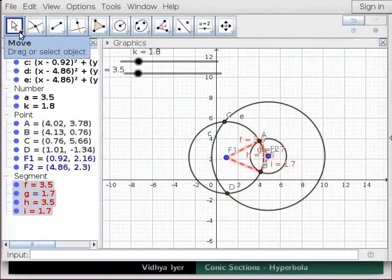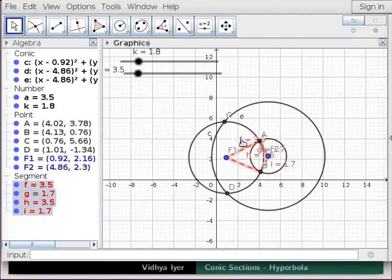Click on Move if it is not highlighted. Move the Labels to see them properly in Graphics View.